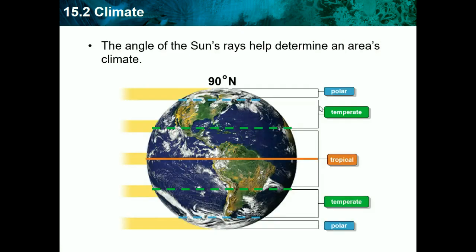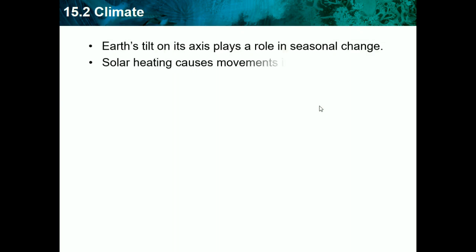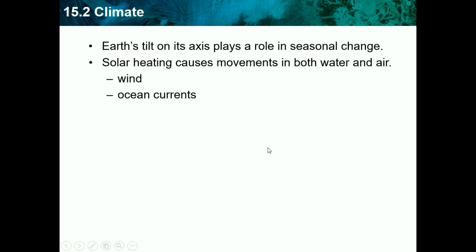The angle of the sun's rays helps determine an area's climate. The Earth is tilted on an axis and we revolve around the sun, so the sun's rays hit different parts of the Earth at different degrees depending on where we are in our cycle. This is what creates our seasonal changes. Solar heating also causes movements in both water and air — wind and ocean currents. When air is heated, it rises, and other air takes its spot, heats up, and rises in turn. It's basically a circular current system, and Earth's rotation also has an effect on wind and currents.